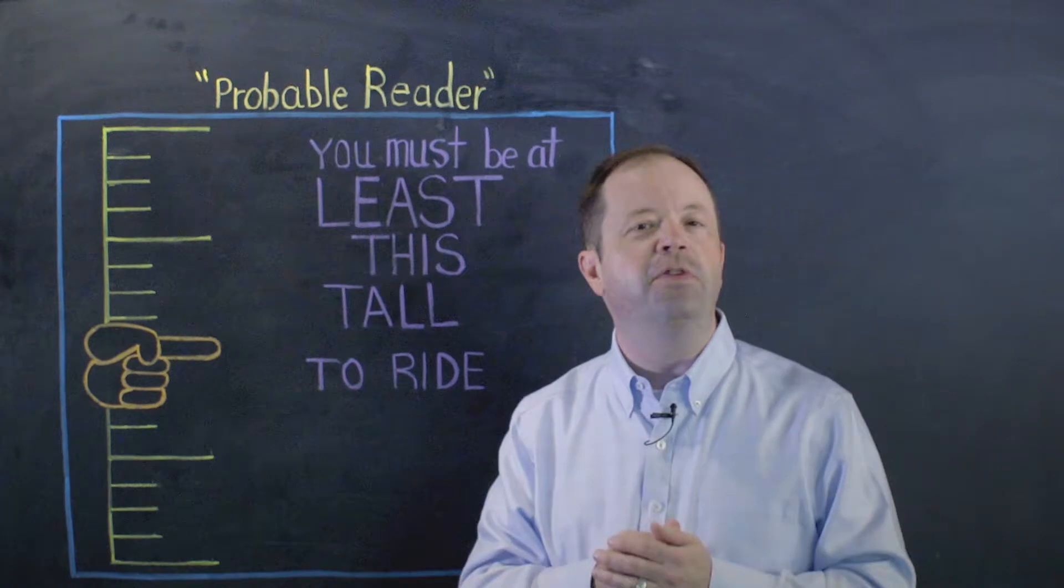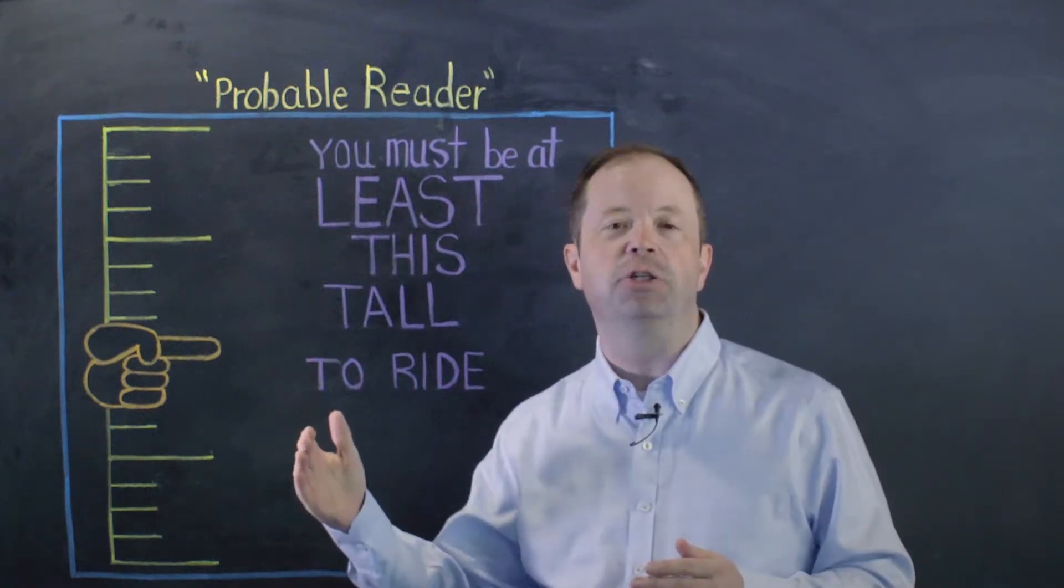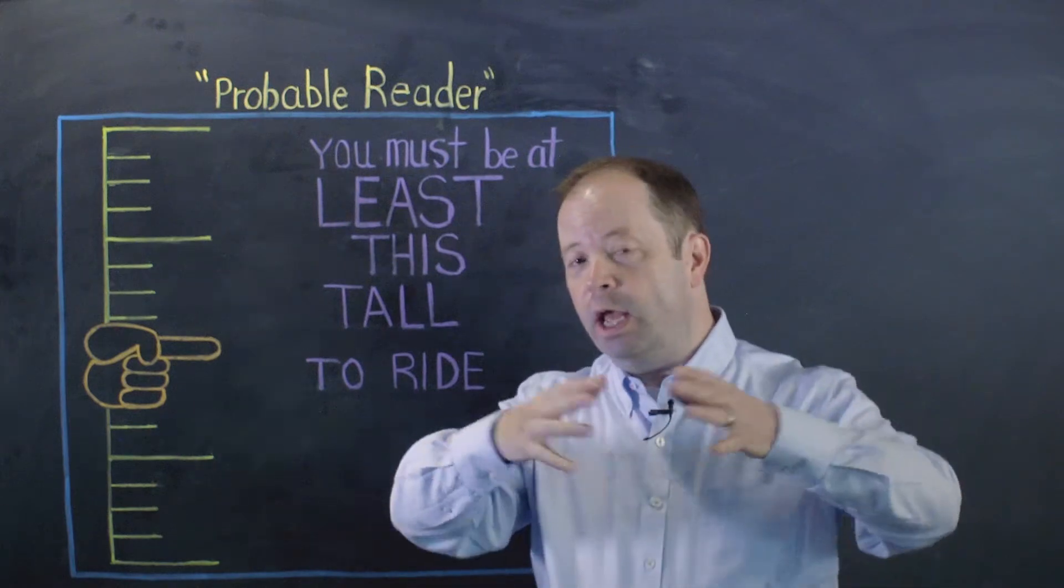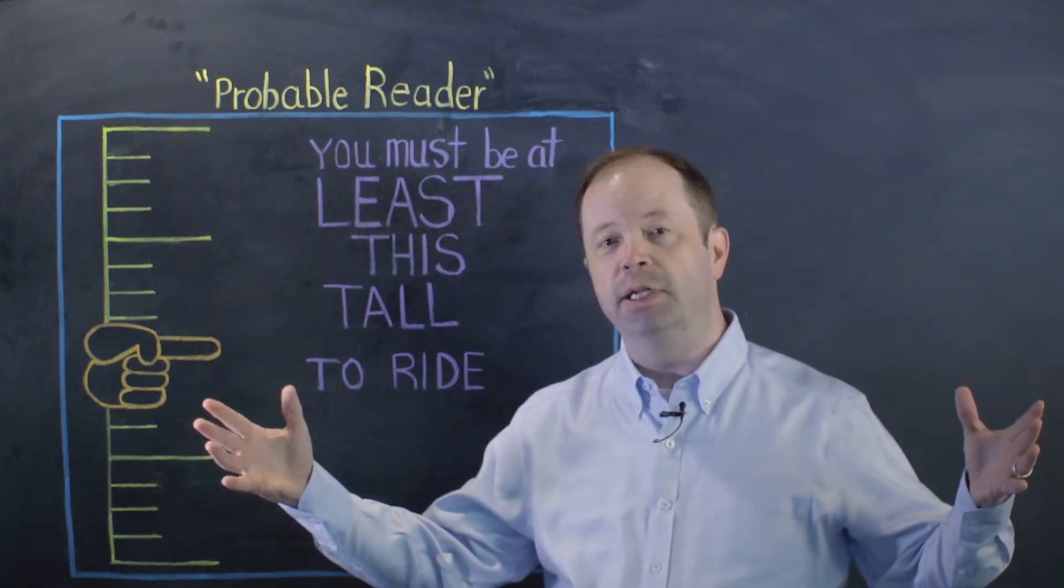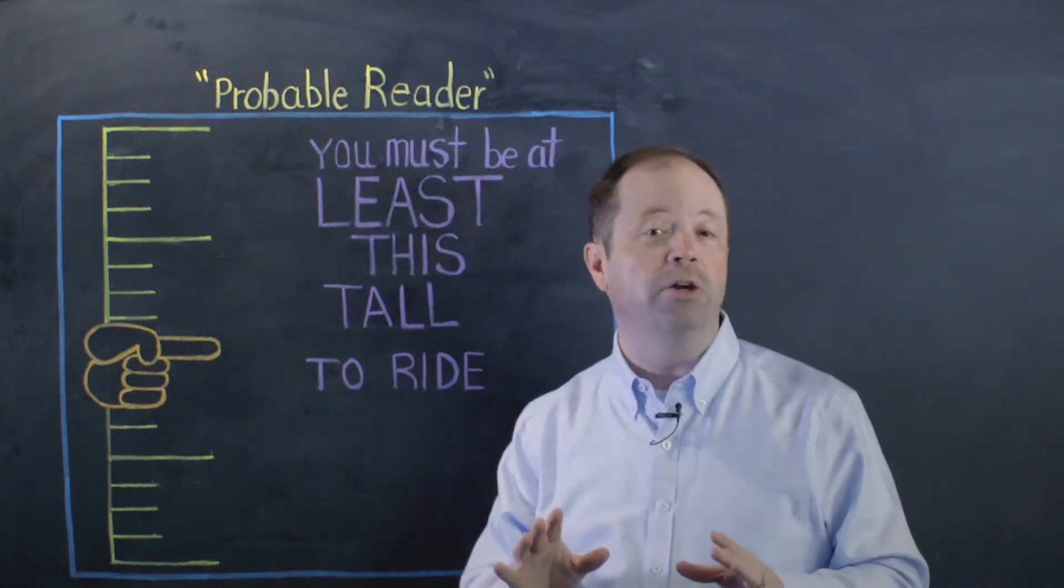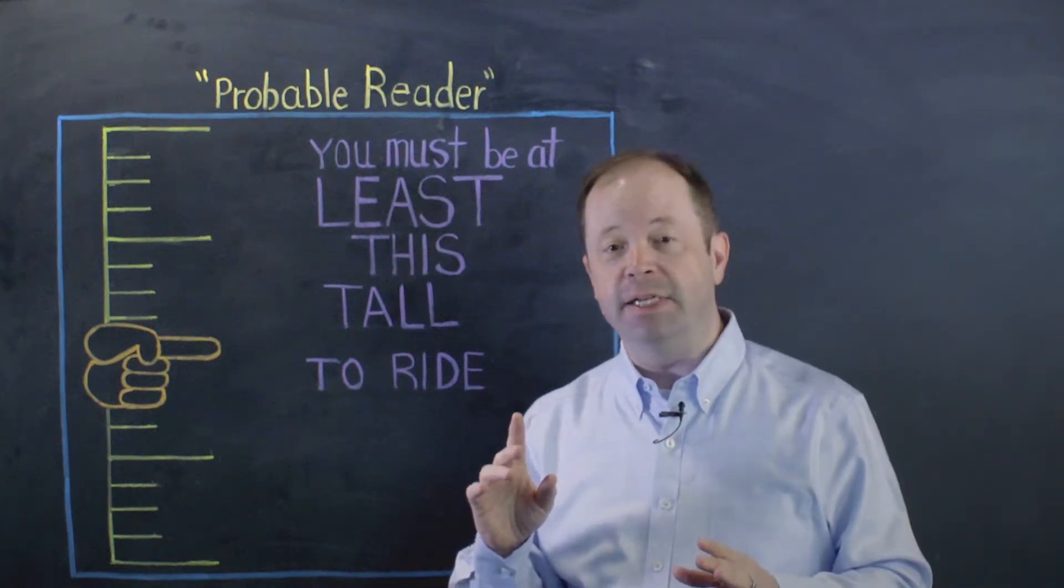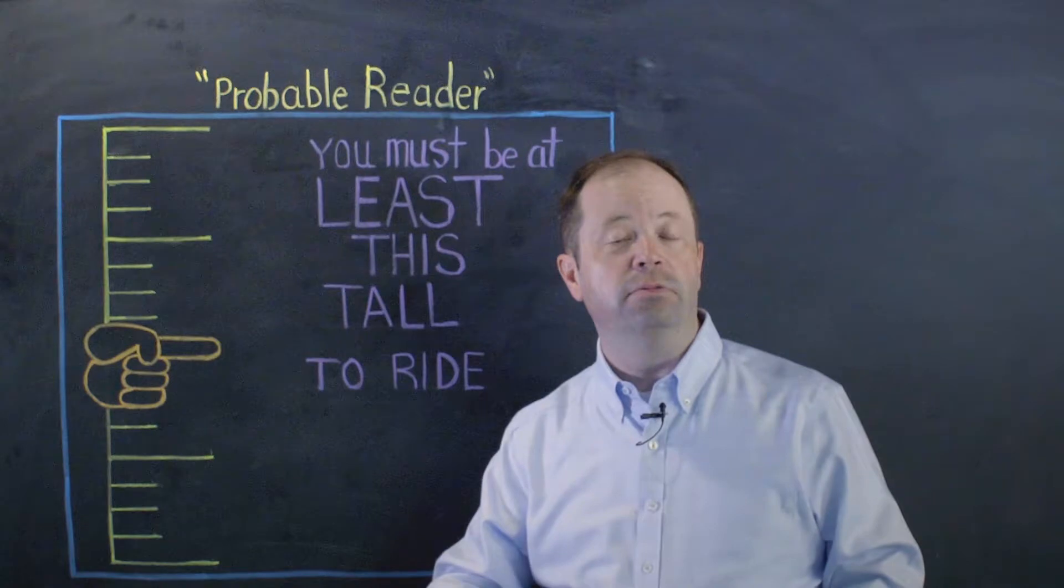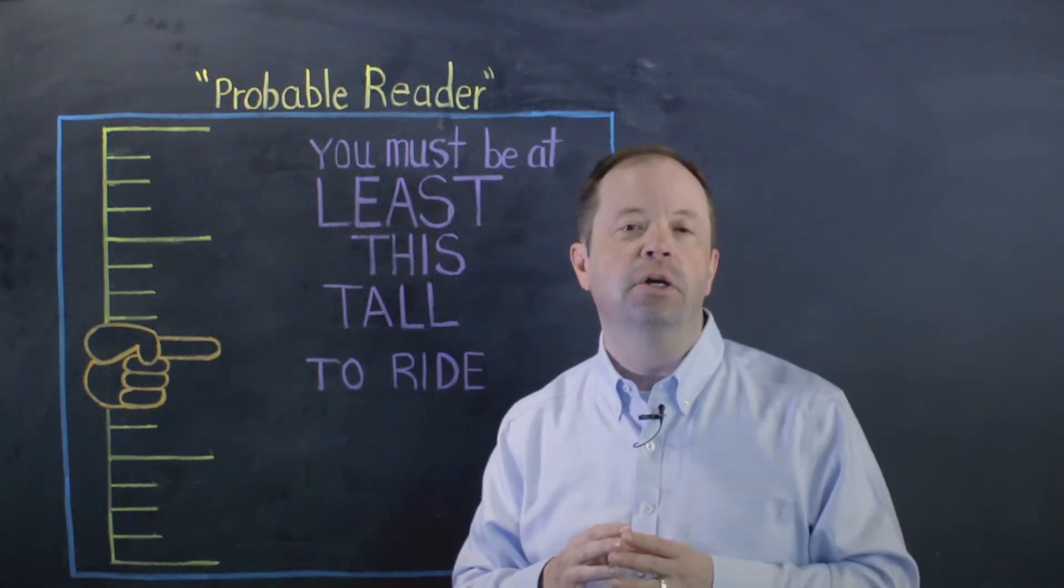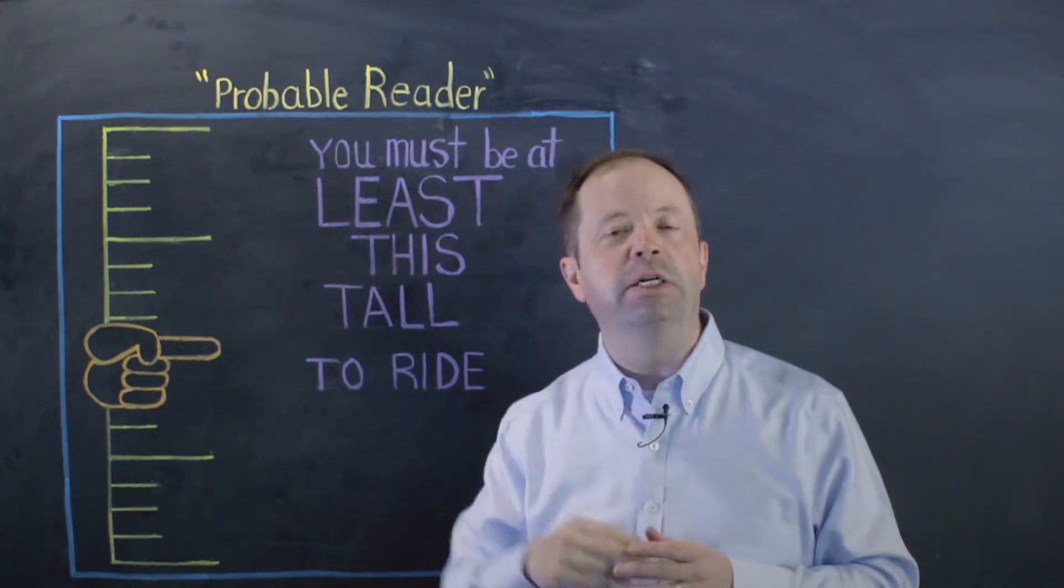This is one of the four literacy classifications in STAR early literacy. And what I mean by that is, whenever a student takes a STAR early literacy test, they are placed into one of the following four categories. They are categorized as an early emergent reader, a late emergent reader, a transitional reader, or a probable reader.